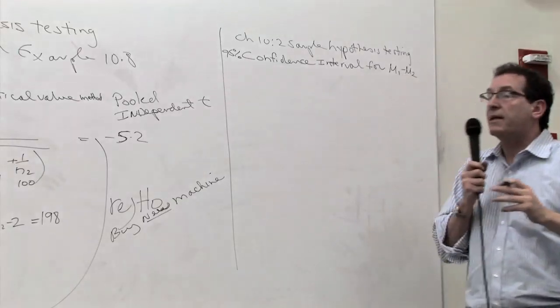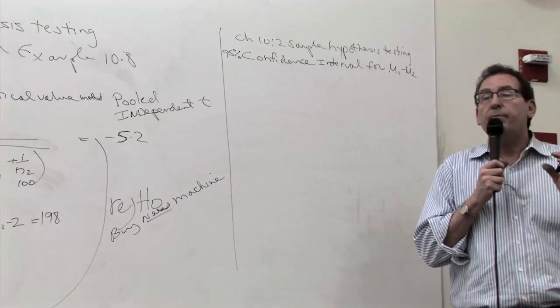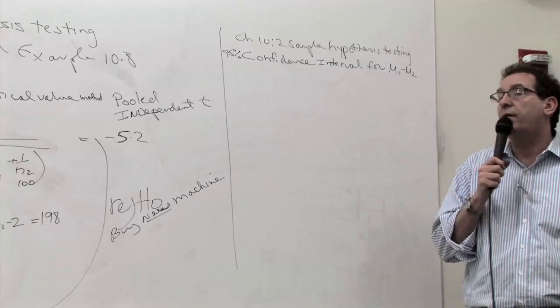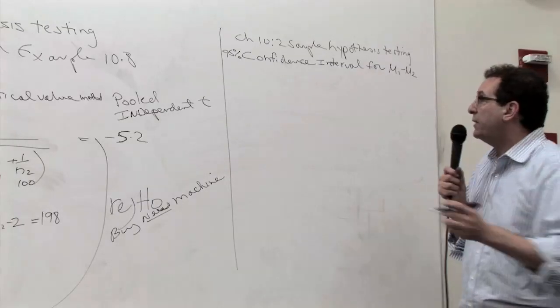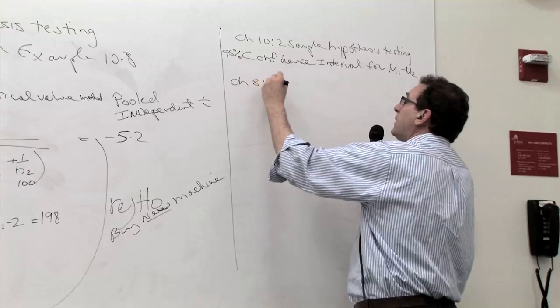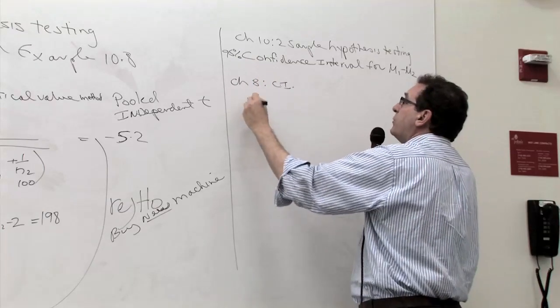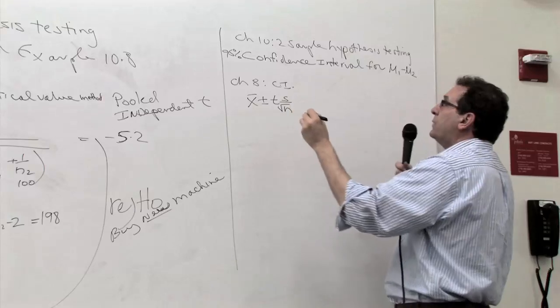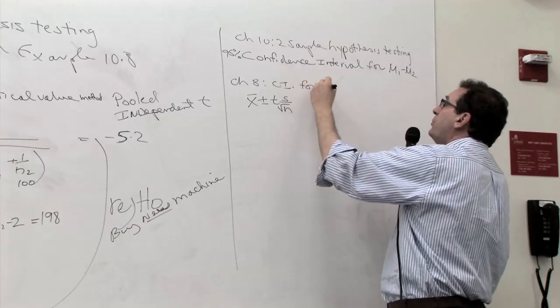Before we start learning about the confidence interval from Chapter 10, maybe it's worthwhile reviewing briefly the first time we saw confidence intervals in Chapter 8. In Chapter 8, we had a confidence interval of the type x̄ plus or minus t times s over √n, but this was a confidence interval for μ, in other words, μ by itself.